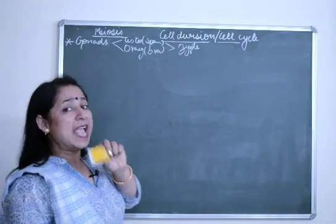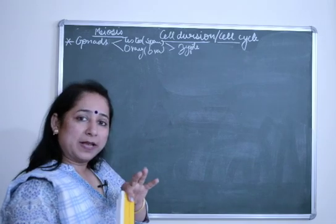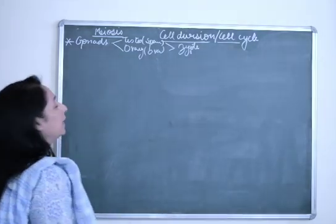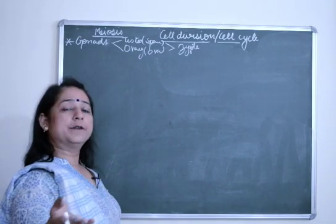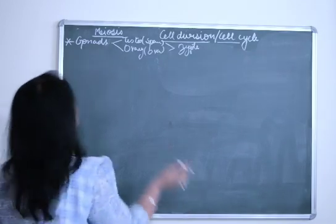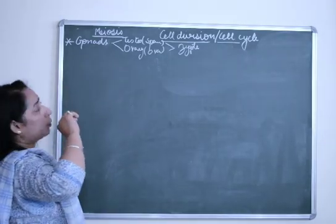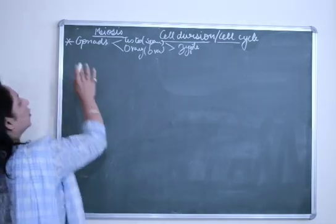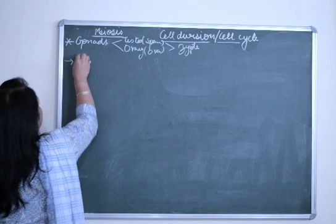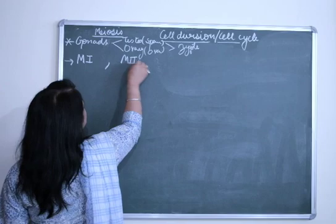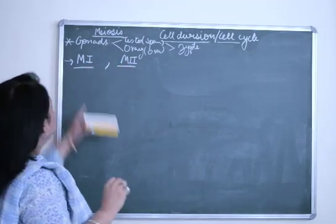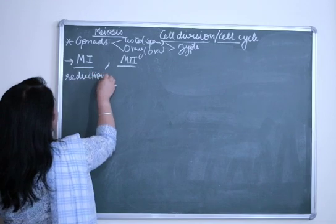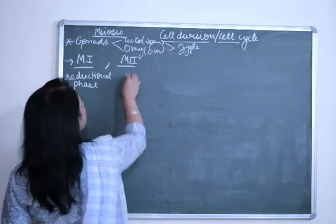The significance of meiosis: there is a question about why gametes — sperm and ova — have half the number of chromosomes. In meiosis there are two stages: M1 phase and M2 phase, that is meiosis 1 and meiosis 2. Meiosis 1 is known as the reductional phase, and meiosis 2 is known as the mitotic phase or equational phase.